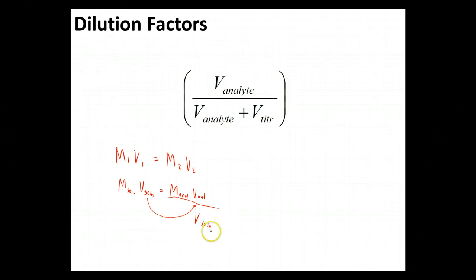What's currently in our solution? Well, it's going to be the amount of original analyte and the amount that we've added to that since. Now we're just going to treat this as being a factor that we multiply the molarity of our analyte, and that tells us the current molarity of our solution.